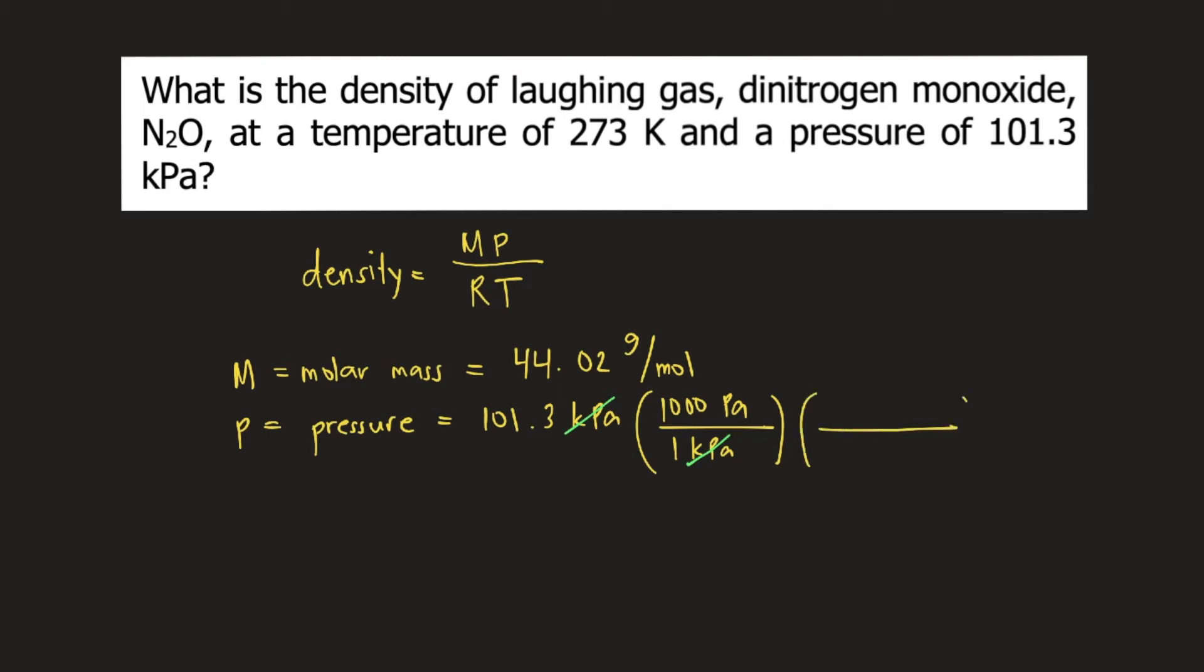We know that 1 atm is equivalent to 101.325 pascal. So pascal would cancel and we are left with atm.